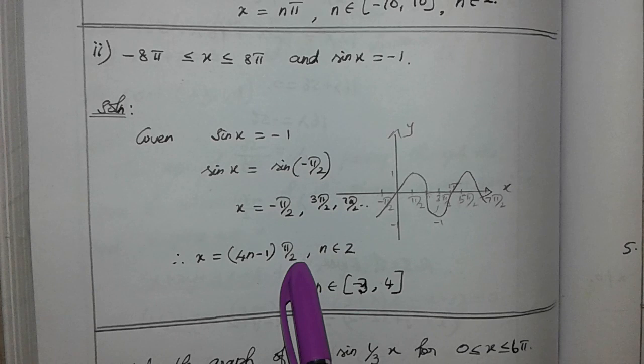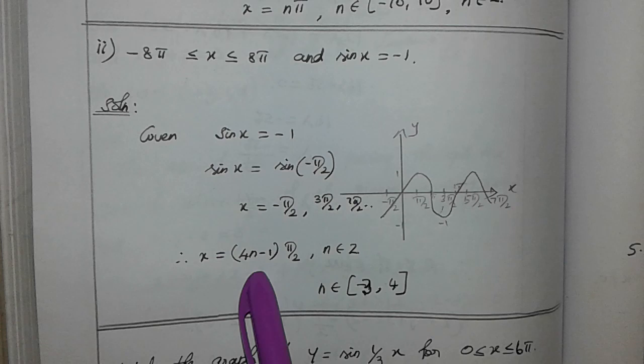If we apply n = 1, we get 4 minus 1 equals 3, so 3π by 2. If we apply 2, we get 7π by 2. If we apply 3, we get 11π by 2.